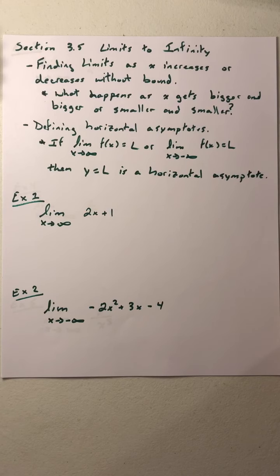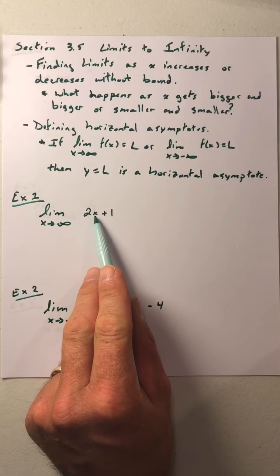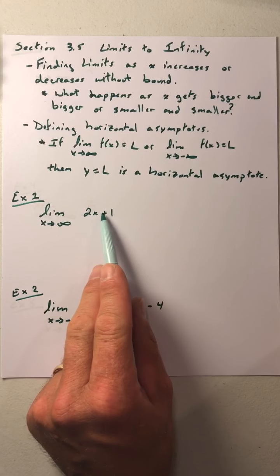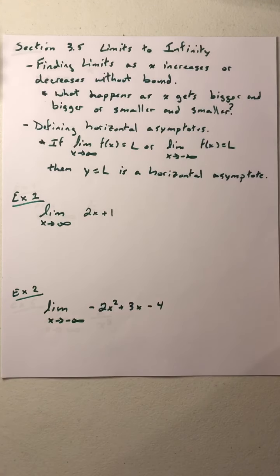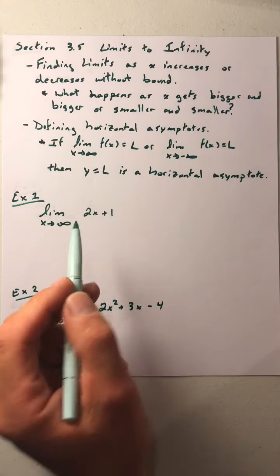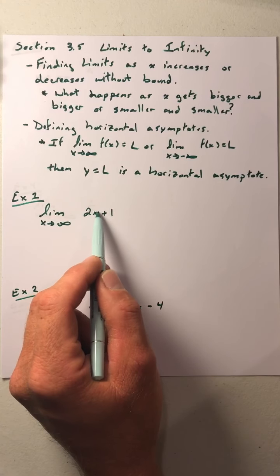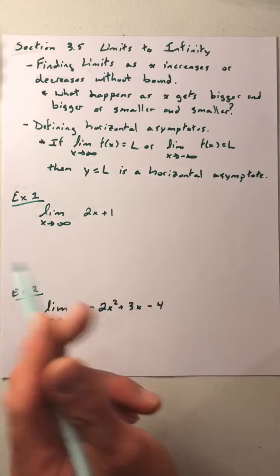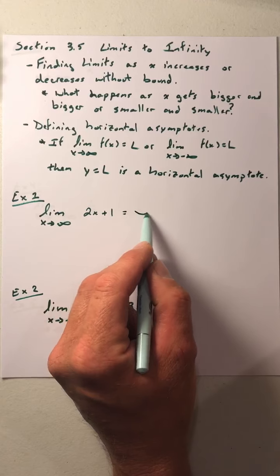In example one, we have the limit as x goes to infinity of 2x plus 1. As x gets larger and larger, what happens to 2 times x? That's going to get larger and larger as well. That plus 1 increases it by 1, but as we get bigger and bigger numbers, the plus 1 becomes very irrelevant — if we add 1 to a million, it's pretty close to a million. So if we take 2 and multiply it by a larger and larger number, that gets larger. The limit as x goes to infinity of 2x plus 1 equals infinity.